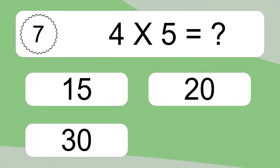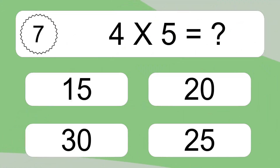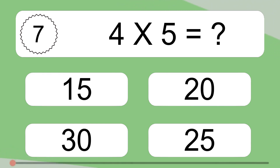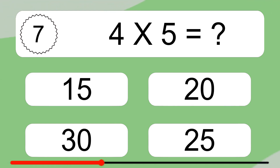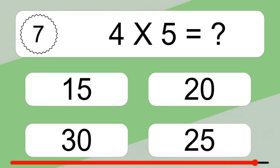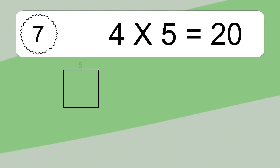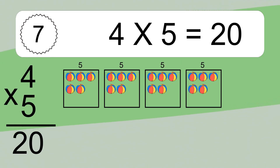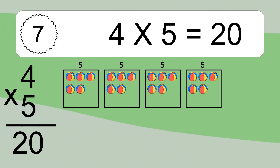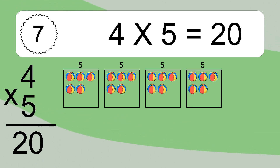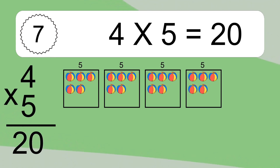Four times five equals what? Four times five equals 20. We have four boxes and each box has five colorful balls inside. If you count all the balls in all the boxes together, you will have four times five balls. This equals 20 balls.